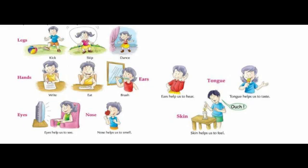Teeth help us to chew and bite. Tongue lets you taste different things. Arms — we have two arms. There is a hand at the end of each arm. A hand has four fingers and one thumb. You use your hands to pick up, hold, catch and throw, push and pull things, clap, and wave. You can also touch and feel things with your hands.